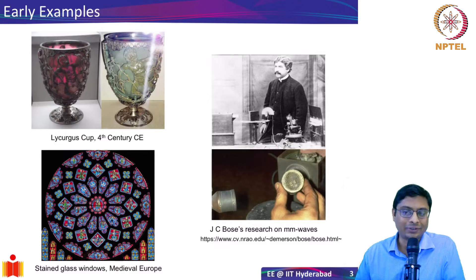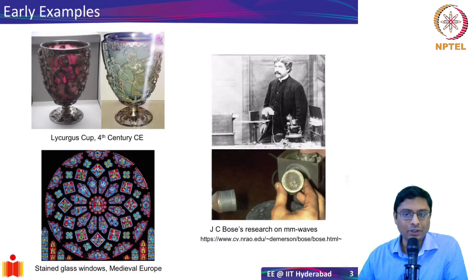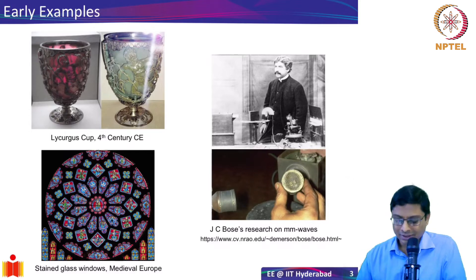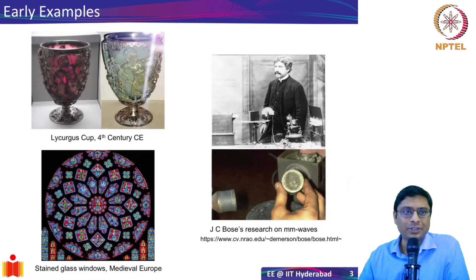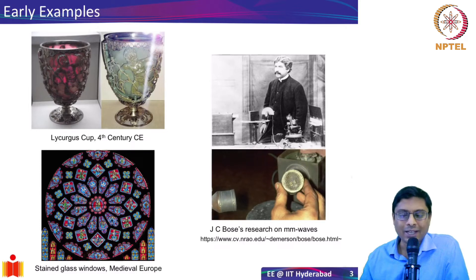By the medieval era in Europe, there were many churches built with stained glass windows — for example, possibly Notre Dame. These beautiful colors were again produced by colored glass. By that time, artisans understood how to make these colored glasses precisely by introducing controlled concentrations of various metals. Interestingly, even though these stained windows were fabricated perhaps three or four centuries ago, the colors are not faded. The reason is what we call structural colors — it's not because of a dye that is mixed, but because of nanoparticles introduced into the glass.